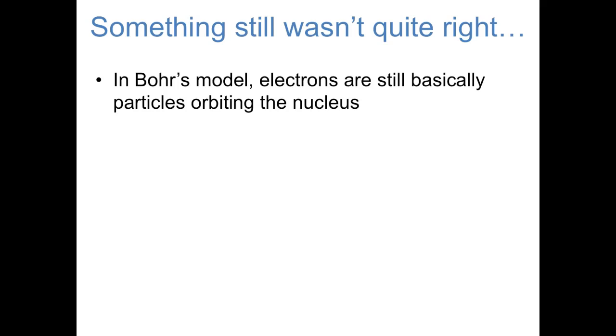So the Bohr model of the atom does a reasonable job rationalizing emission spectra. But still, something feels like it's not quite right. In the Bohr model, electrons are still basically particles orbiting the nucleus. So the idea that electrons can only be in specific orbits and somehow get from one orbit to the other without occupying the space between is kind of strange.